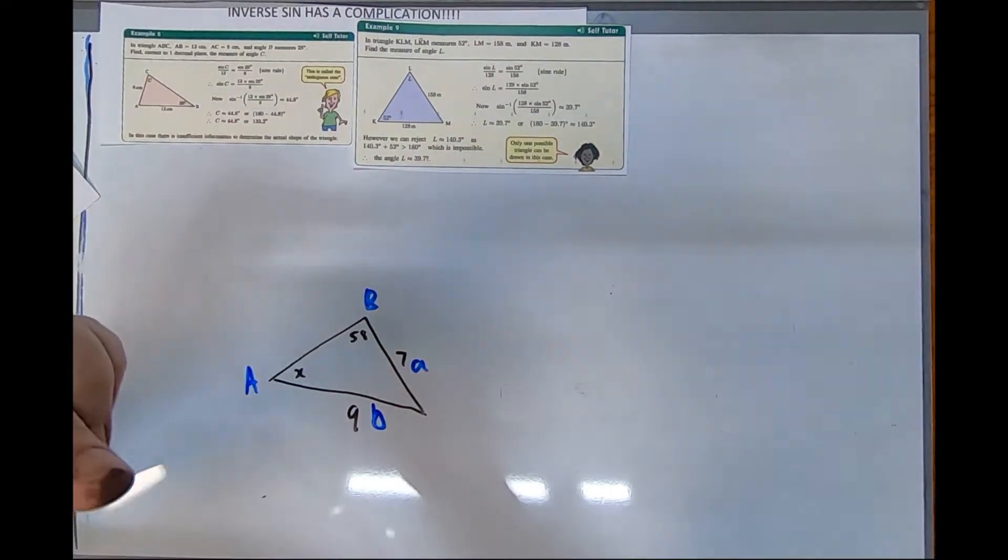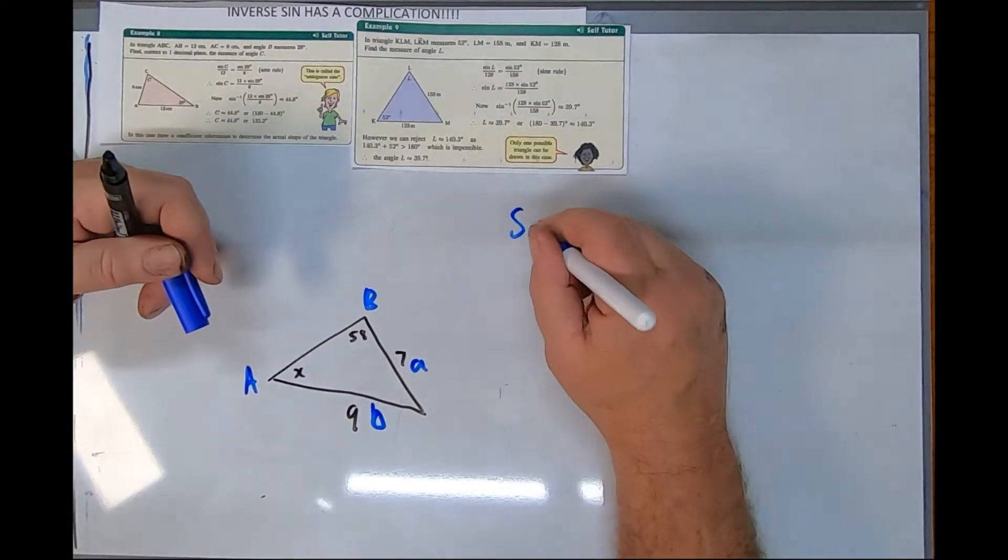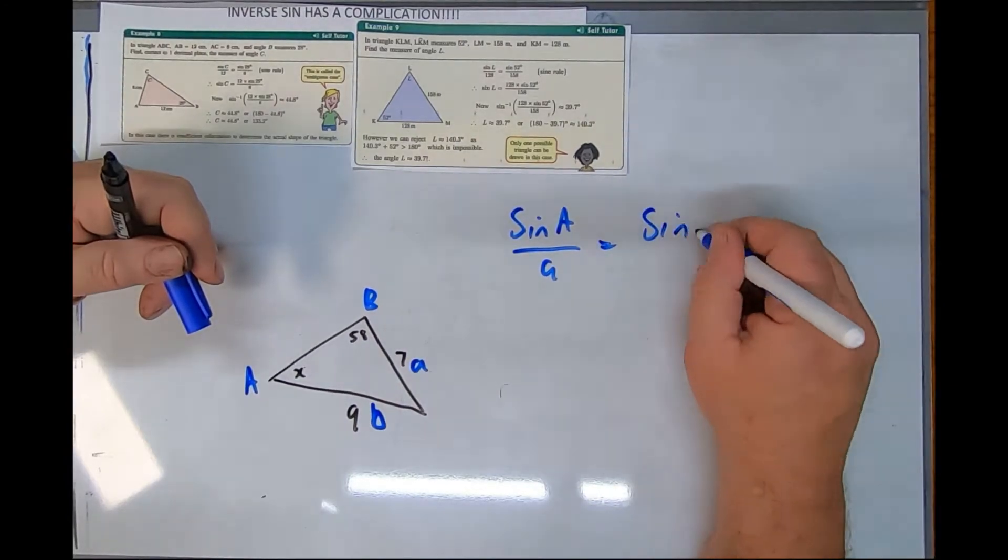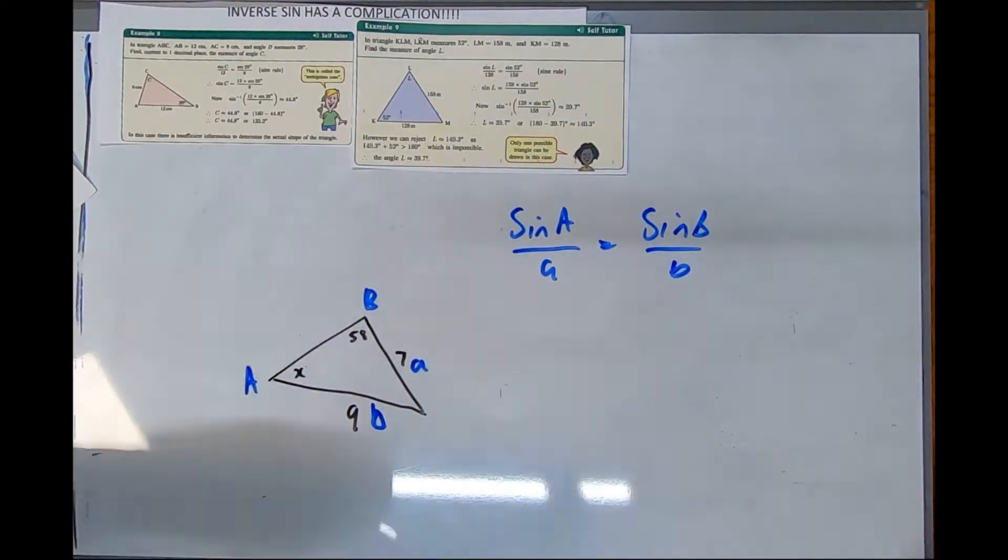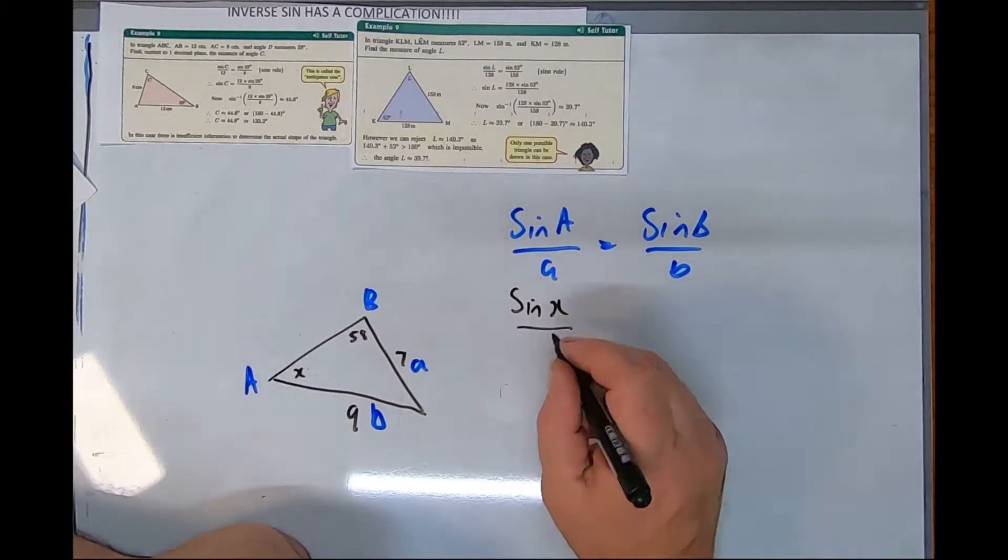I don't need to see it. I'm looking for an angle, so I'm going to write sin A over little a equals sin B over little b. Now let's put our numbers in, there's my unknown letter.